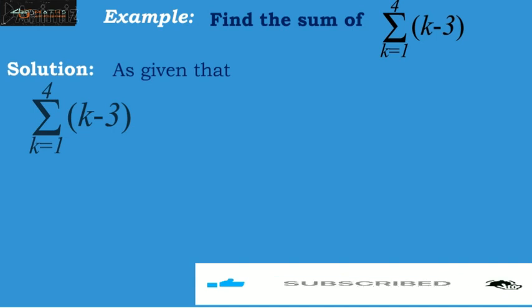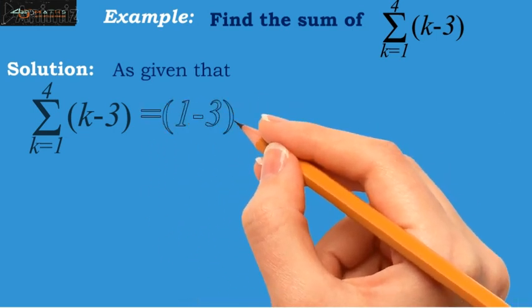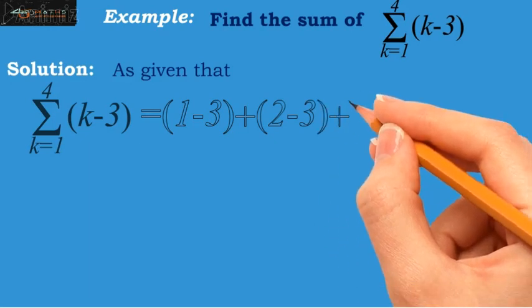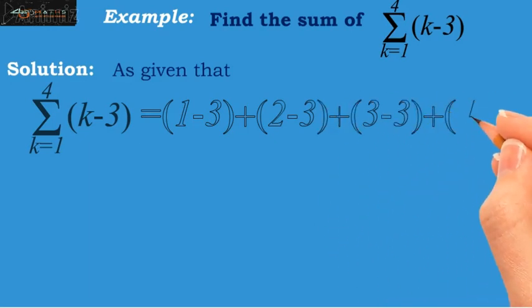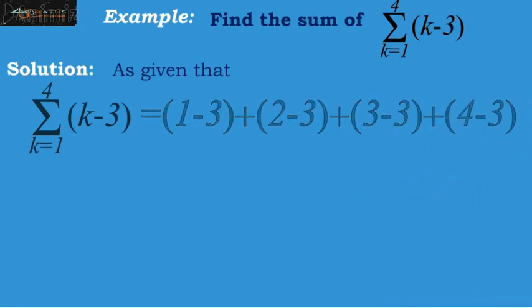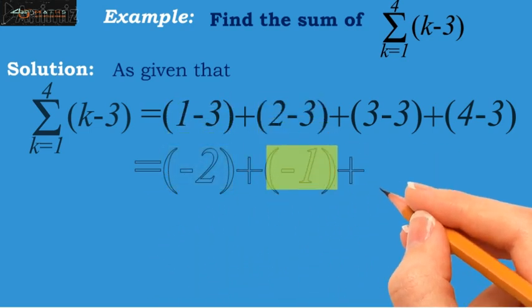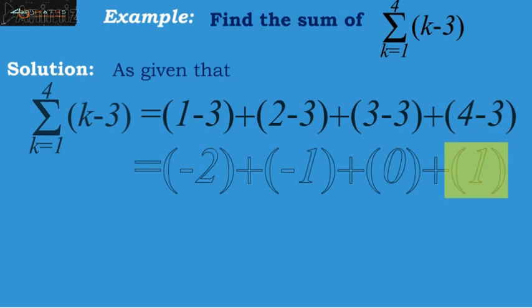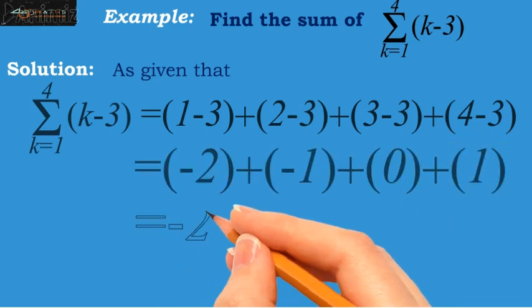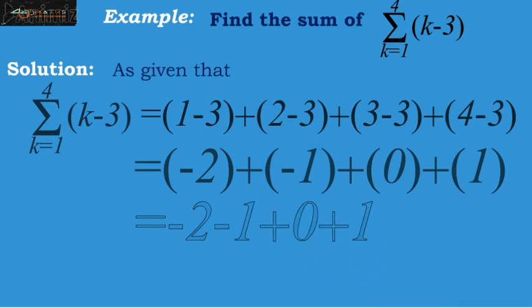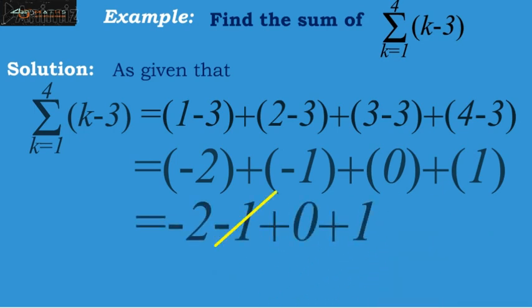Thus, we have 1 minus 3 plus 2 minus 3 plus 3 minus 3 plus 4 minus 3, which on simplification gives minus 2 plus minus 1 plus 0 plus 1. Further simplification gives minus 2 minus 1 plus 0 plus 1, and its final answer is minus 2.